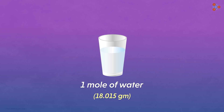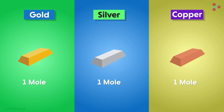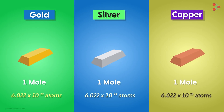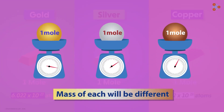For the sake of comparison, if we take one mole of gold, one mole of silver, and one mole of copper, then all of them will have the same number of atoms — that is 6.022 x 10 raised to 23 atoms. This number is Avogadro's number. However, the mass of each one will be different, because the mass of the individual atoms that make up these elements is different.